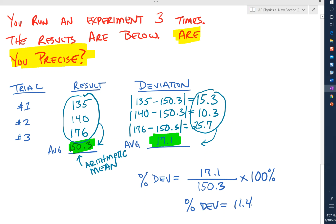Again, there's no negatives. Everything gets absolute value. And so like accuracy, this is less than 20%, so I am precise.